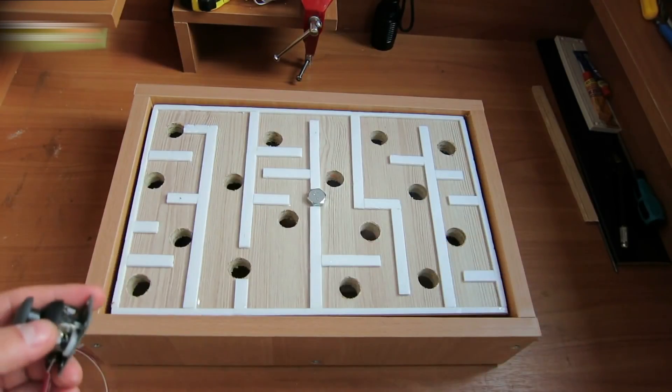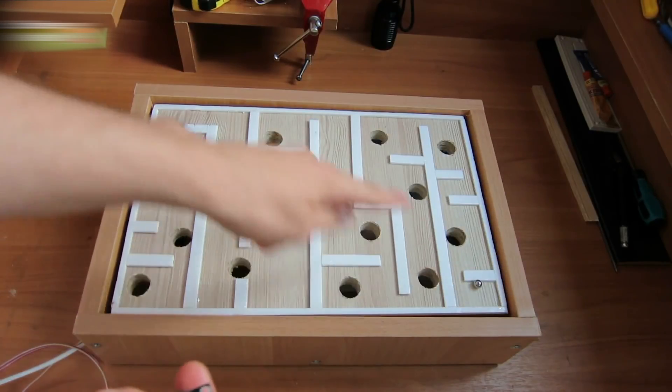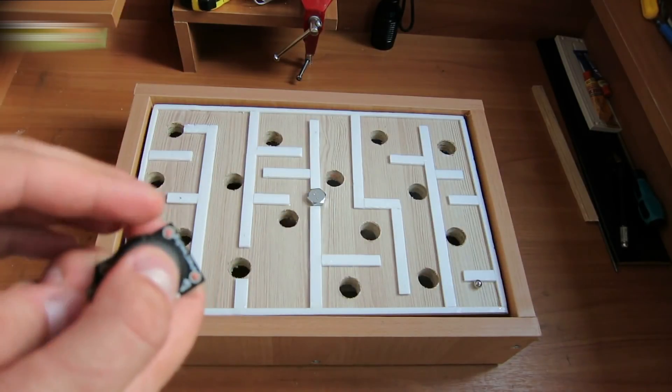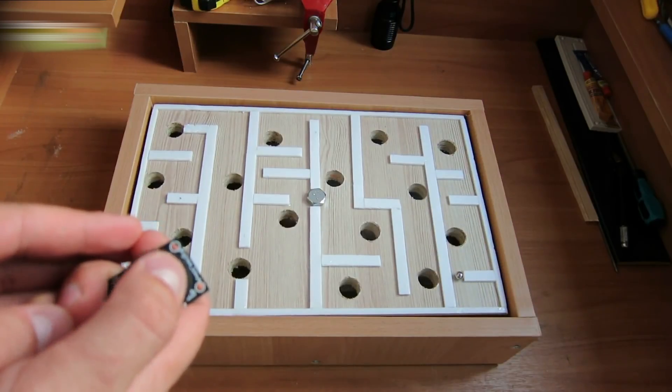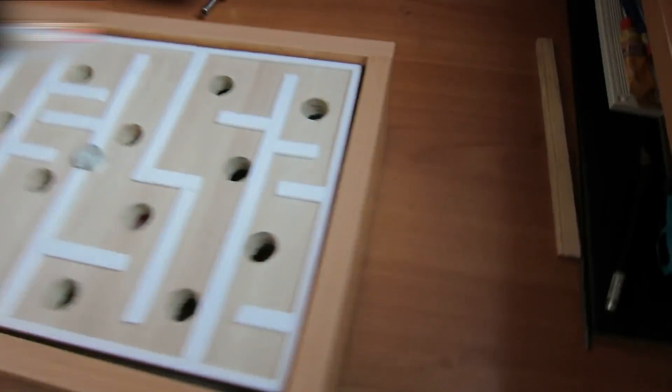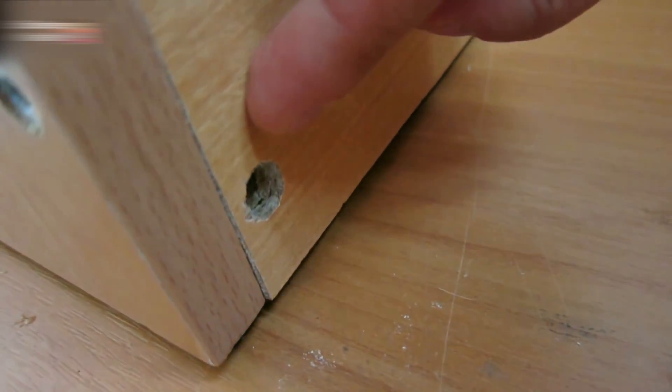Let's play. Take the ball, put it at the starting point. The goal is to make the ball reach this point. Try it first. Here is another hole in this part of the box. It's for the ball to roll out.